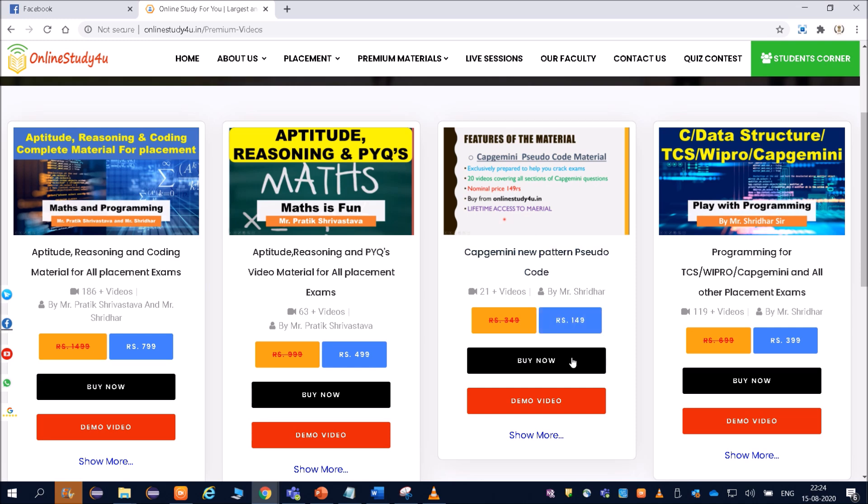The price, friends, we have kept very nominal: 149 rupees for 21 videos. If somebody has bought the videos earlier, it was 20 videos. Now we have added one more video, so you can check it will be 21 videos. You can buy the video right now and start watching before it is too late. Thank you, friends.